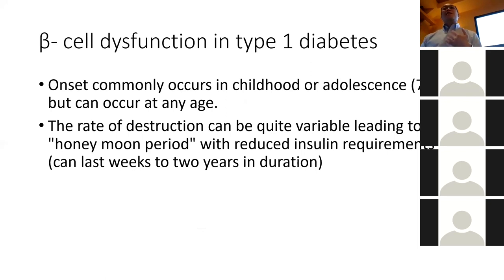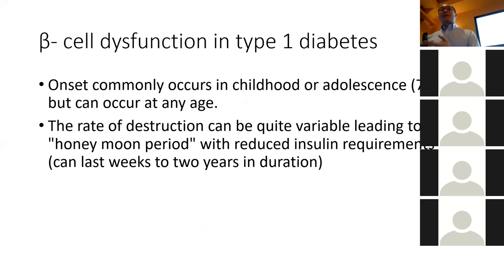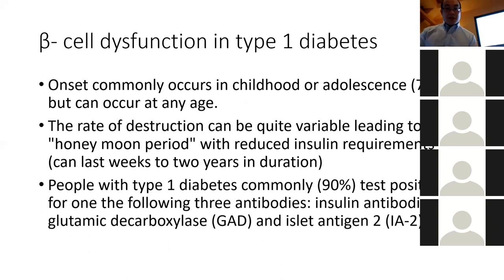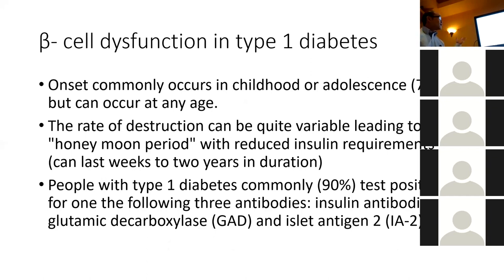Type 1 diabetes is a problem of autoimmunity — your own immune system is attacking your pancreas when it's not supposed to. Often people with type 1 diabetes will also have other autoimmune diseases. It's difficult to diagnose type 1 diabetes, but often they'll have antibodies to insulin and antibodies to beta cells. Most people will test positive for one of these antibodies because these are the ones attacking the pancreas and the insulin.